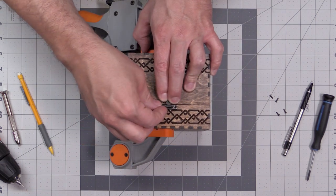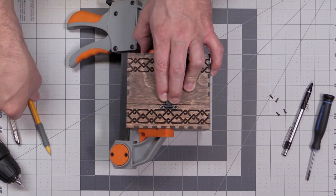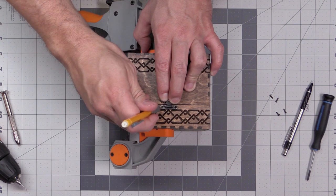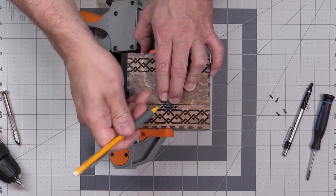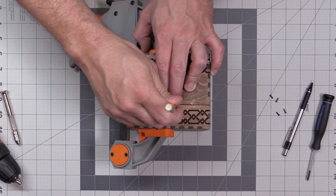Now I'm going to take the hasp and line it up on the box exactly where I want it. I am then going to take a pencil and trace out the screw holes only for the top piece of the hasp.